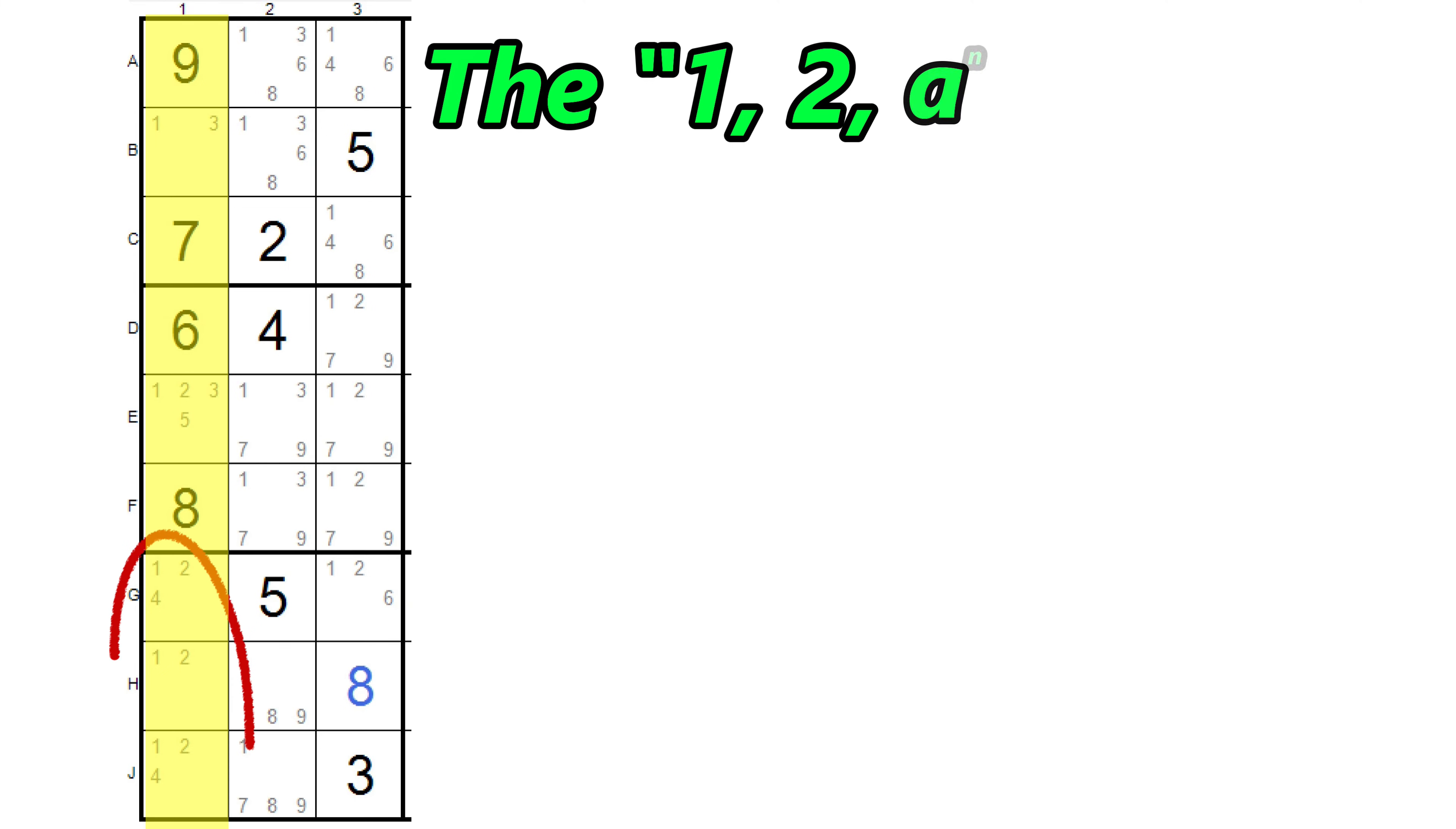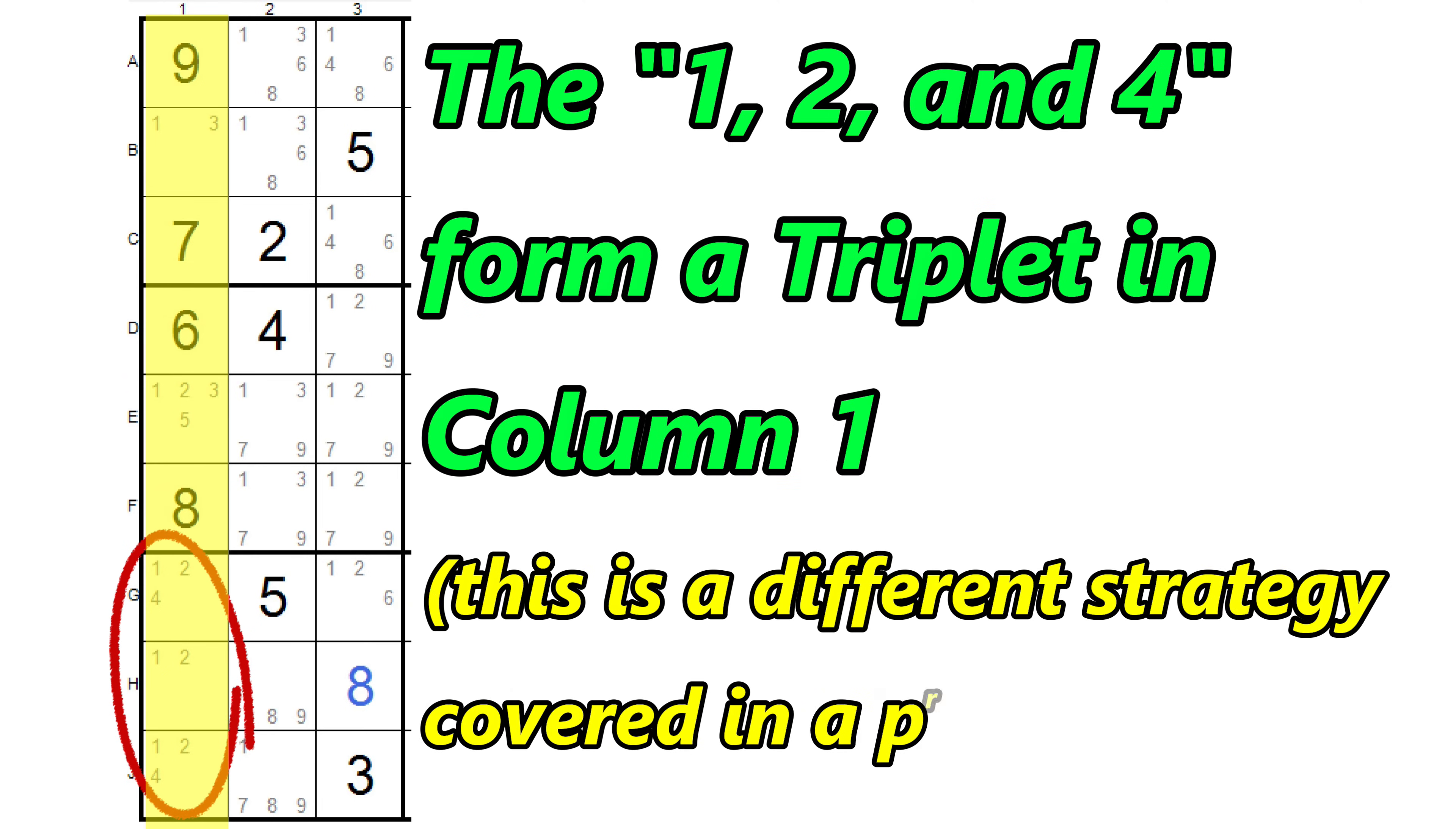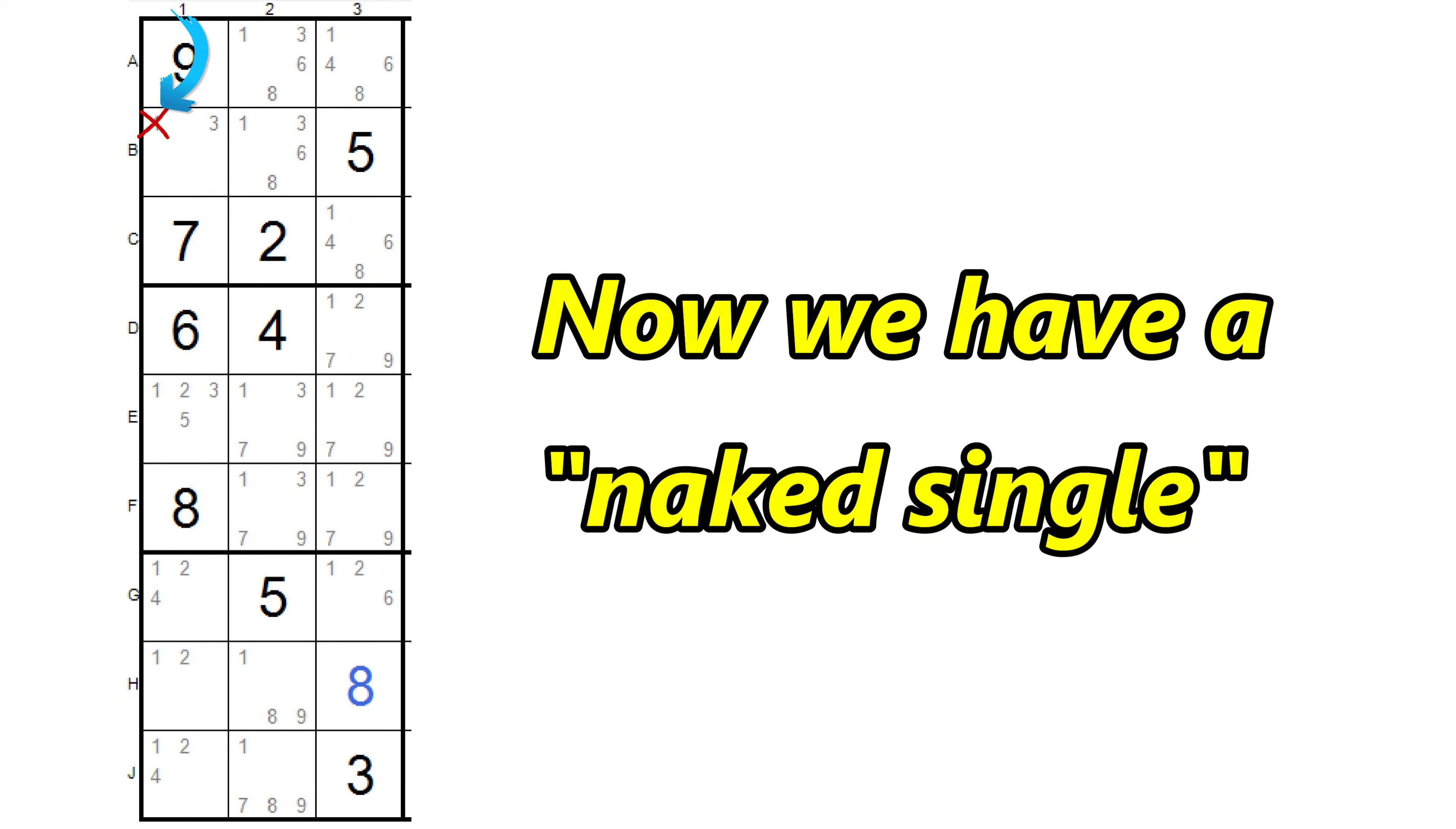We also have a triplet here in column 1. The 1, 2, and 4 are the only numbers that can go here, so we can eliminate this 1 in block 1, and now this cell becomes a 3.